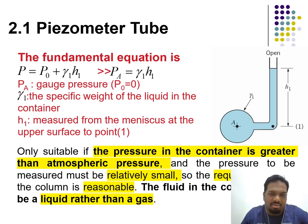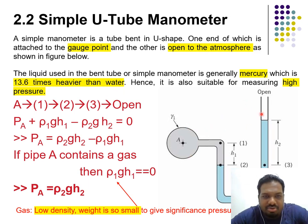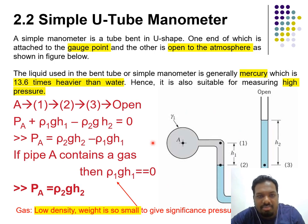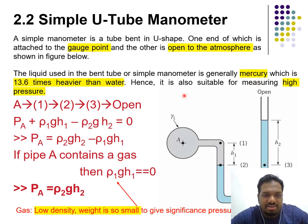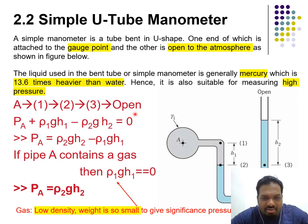Another type is the simple U-tube manometer, which is bent in a U-shape. One end is the measurement end and the other is where you apply pressure. Generally, mercury — which is 13.6 times heavier than water — is used inside, along with water. We have points A, 1, 2, 3, and an open end. The open end equals atmospheric pressure, which we consider as zero for gauge measurement.